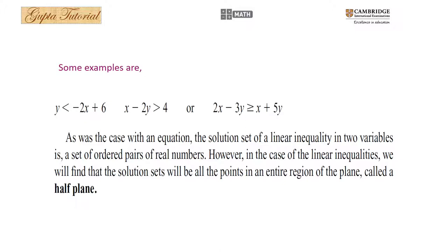As was the case with an equation, the solution set of a linear inequality in two variables is a set of ordered pairs of real numbers. However, in this case, the solution set will be all the points in an entire region of the plane, called a half-plane.